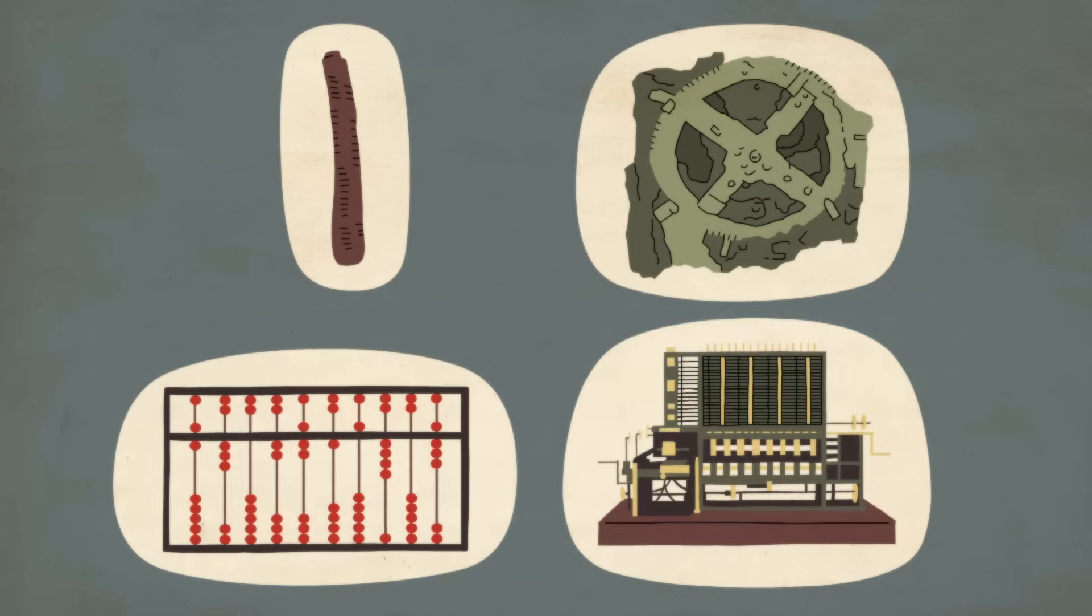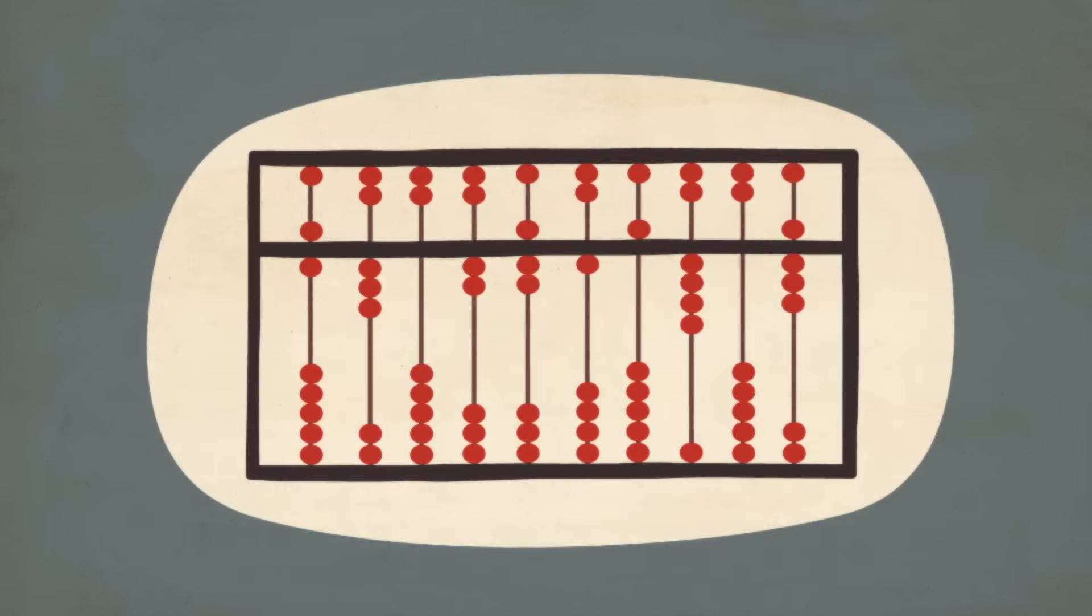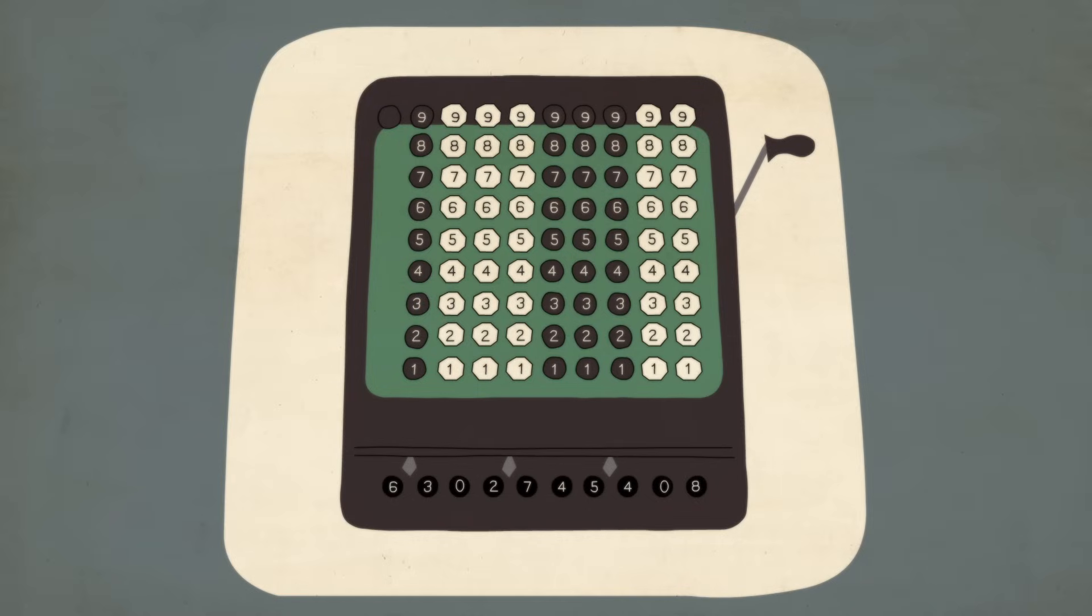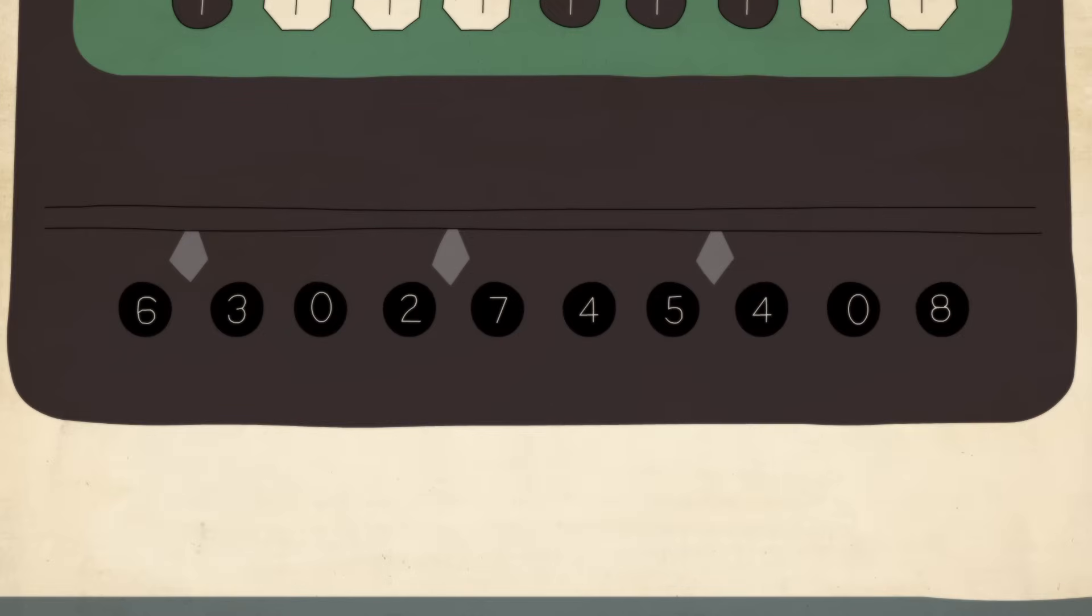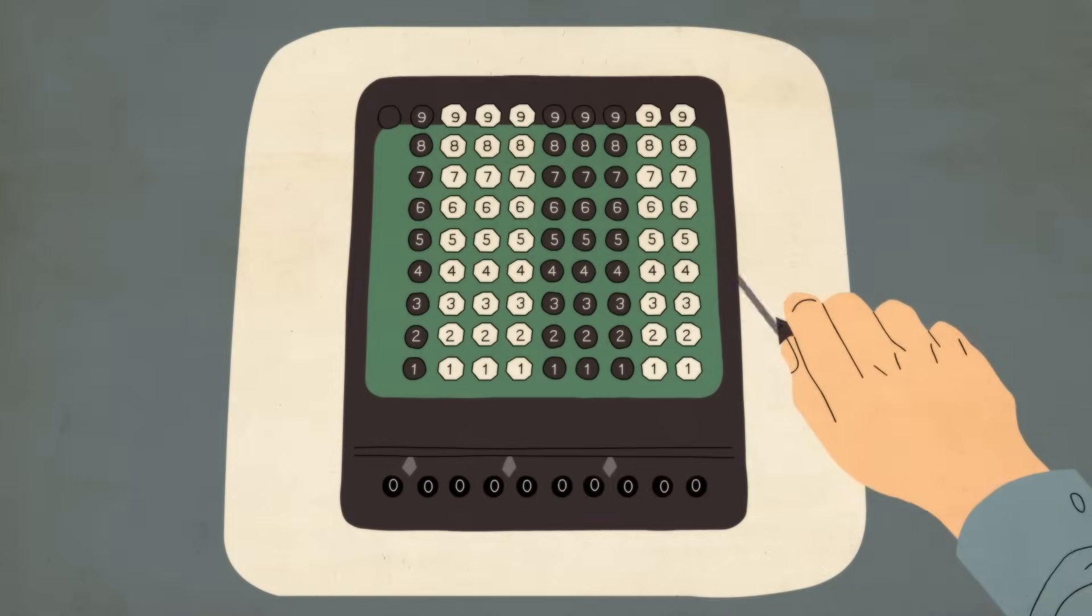The earliest computers were manual counting devices, like the abacus, while later ones used mechanical parts. What made them computers was having a way to represent numbers and a system for manipulating them.